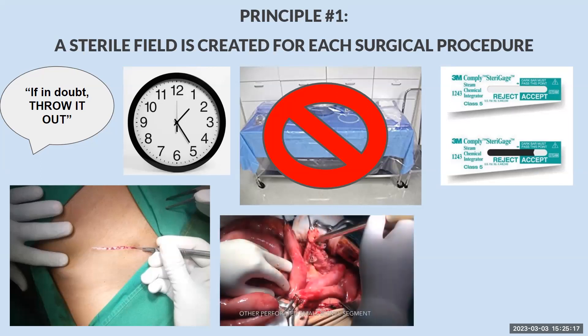For clean, contaminated, and contaminated procedures — such as a case where the bowel is opened, as you see here — separate setups should be used for the clean and dirty portions of the procedure. You should not reuse instruments used during an open bowel or dirty portion of a procedure, and you also should re-gown and re-glove before returning to the use of the sterile instruments from the clean setup. The setups have to be completely separate, and it can be within one procedure that you have two separate setups.